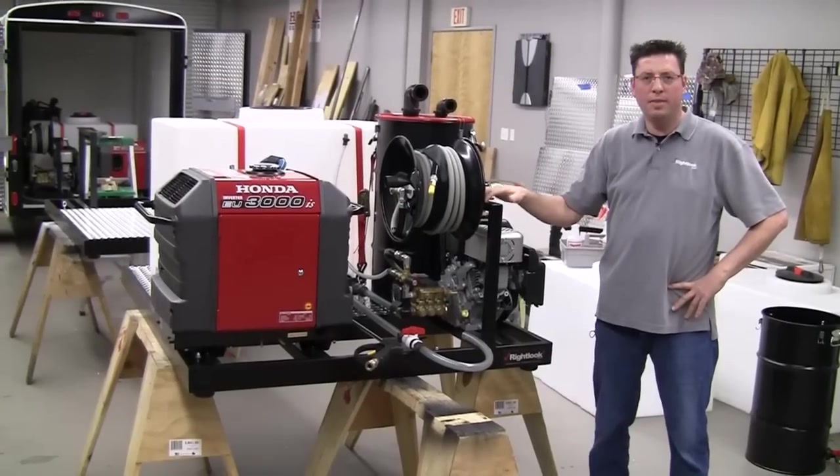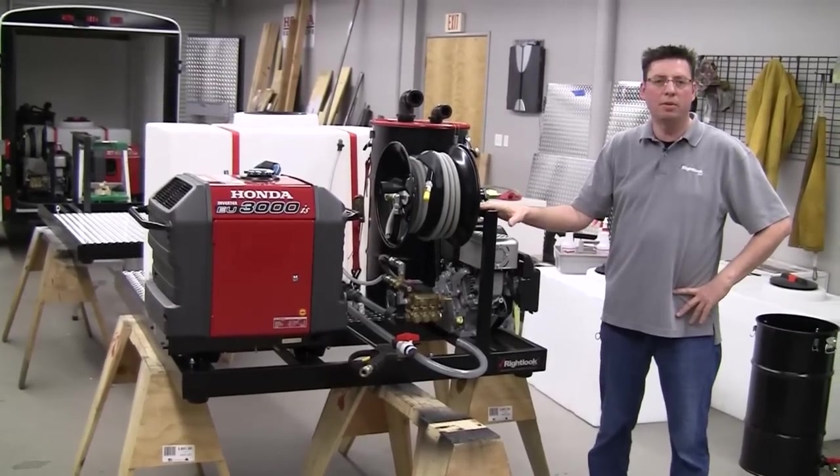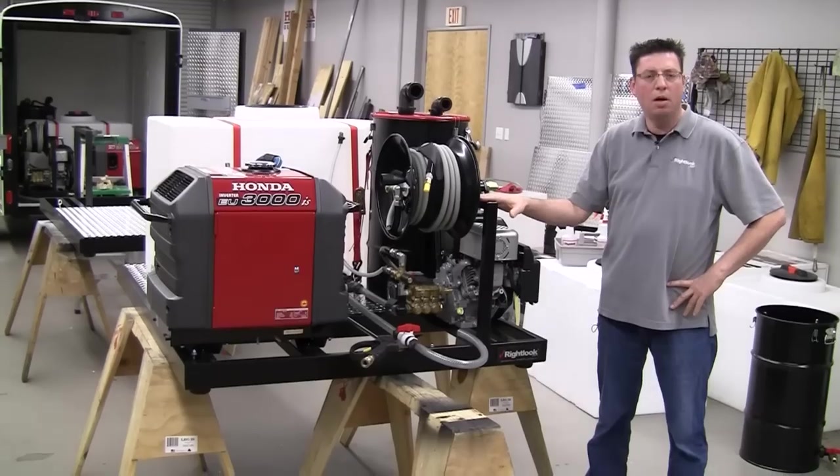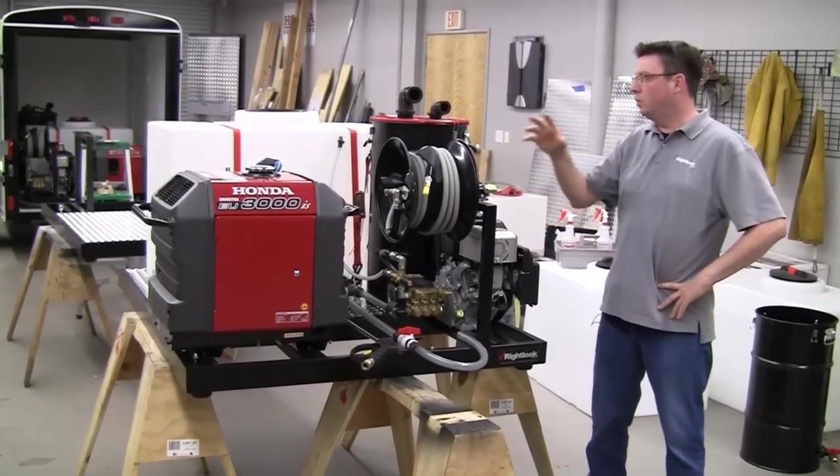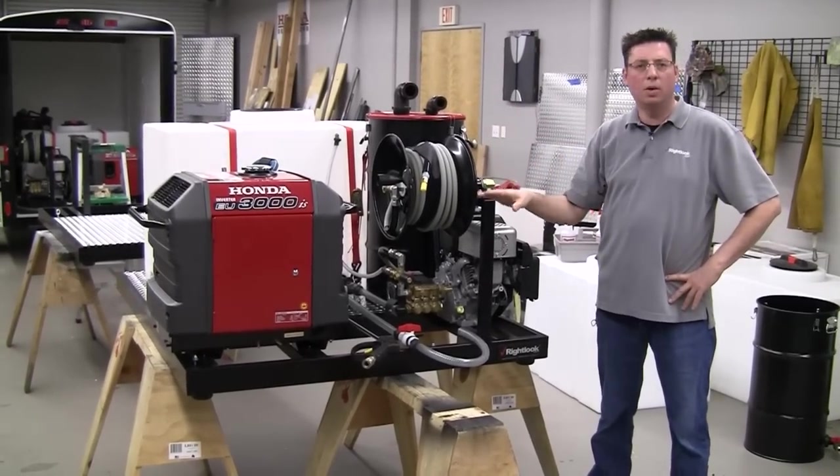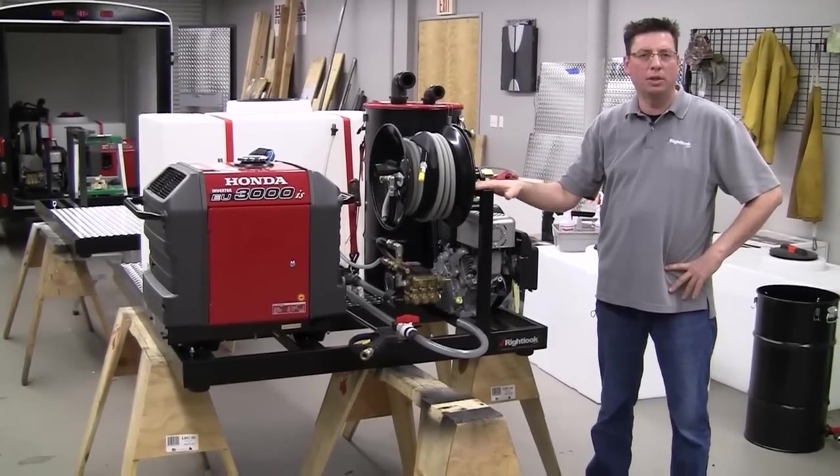This is called our skid mount unit, and this is designed for a mobile detailer to put into the back of his van or pickup truck, which gives you all of the components that you need to go out and do professional auto reconditioning services.